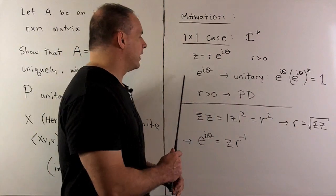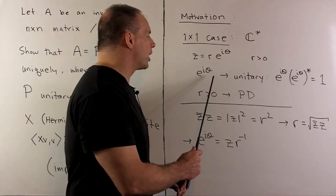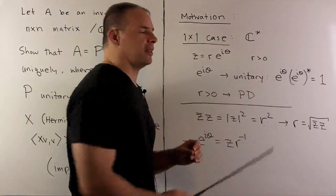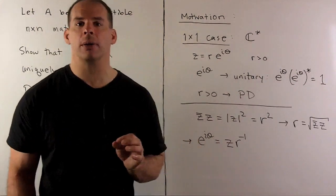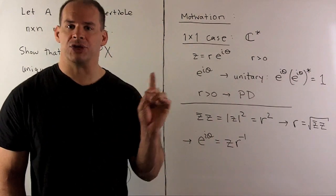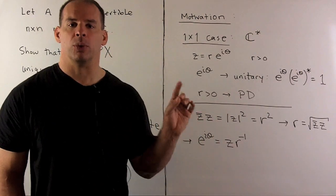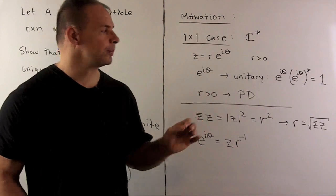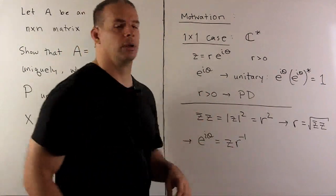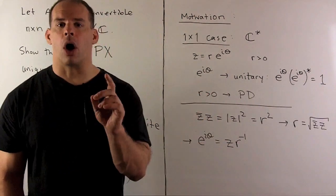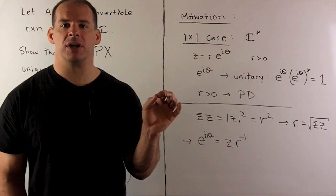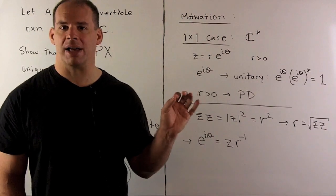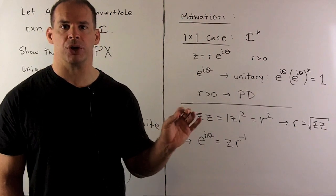Here, e to the i-theta is our unitary factor. If we take e to the i-theta times e to the i-theta star — that's just complex conjugation — we get 1, which is our identity. And r, which is positive, corresponds to a 1-by-1 Hermitian positive definite matrix.